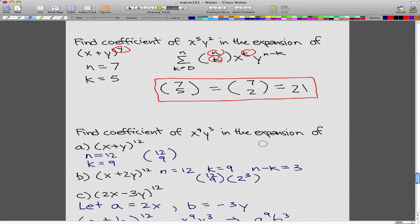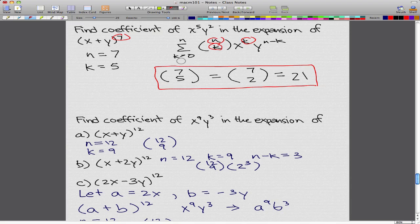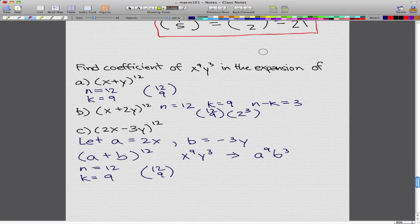So using this equation, we also have to factor in those a's and b's. So 12 choose 9 is really 12 choose 9, a^9, b^3.